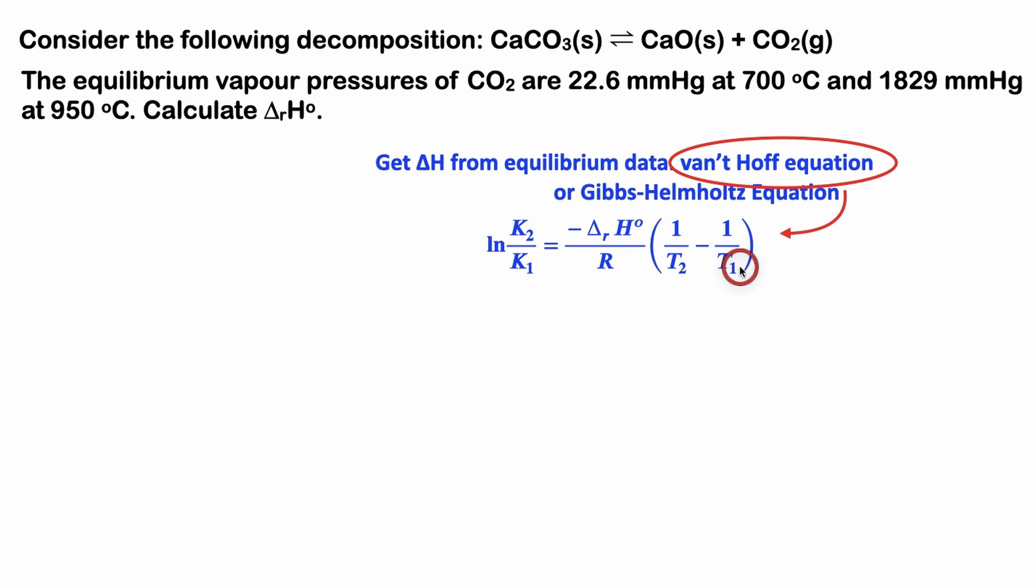We have the two temperatures in the question, but we're given pressures instead of equilibrium constants. So we need to calculate K. It equals the activities of products divided by reactants, and two of our species are solid so their activities are essentially one. Therefore, the equilibrium constant equals the pressure of the gas divided by the standard pressure. This standard pressure is very important to have here.